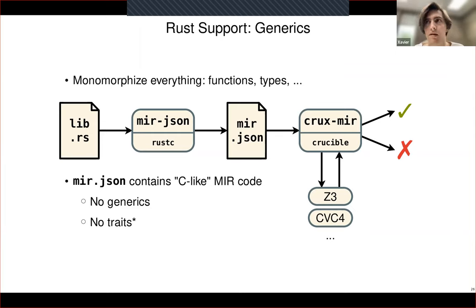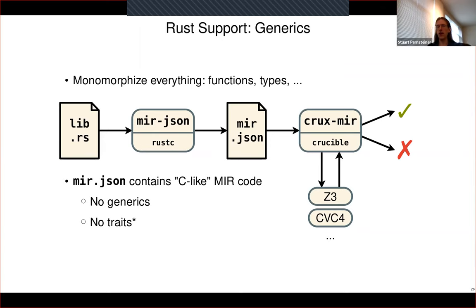Audience question: Do you have any mechanism for users to provide loop invariants — to say 'I know you won't be able to unroll this, but here's the simple logical formula that is the invariant you need'? Answer: We don't have any mechanism for that at the moment. There has been some work toward that in the overall Crux framework. Crux is an overarching framework — we have an LLVM verifier for C/C++ and a MIR-based verifier for Rust, both built on top of Crux. Over on the LLVM side, some people have been looking at what would be needed to add loop invariants, but I'm not sure of the status — it's not very far along yet.